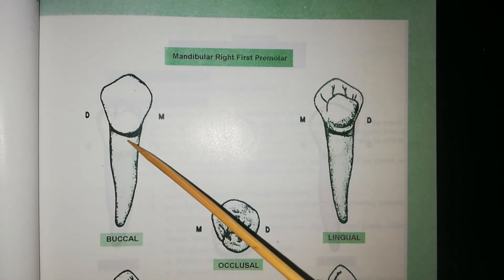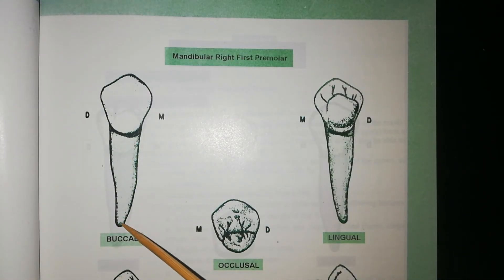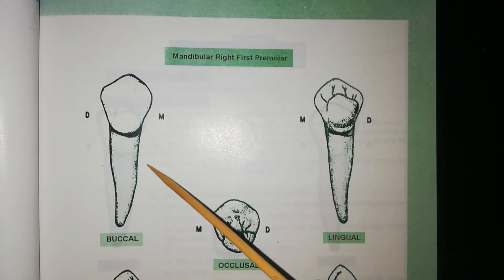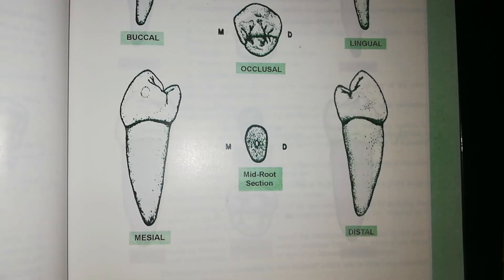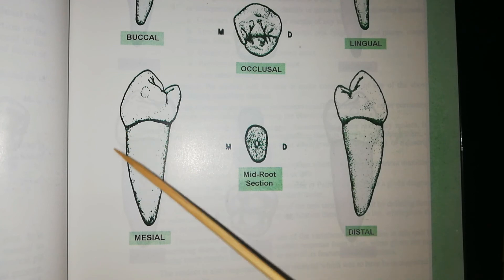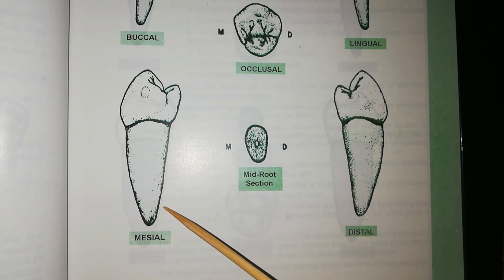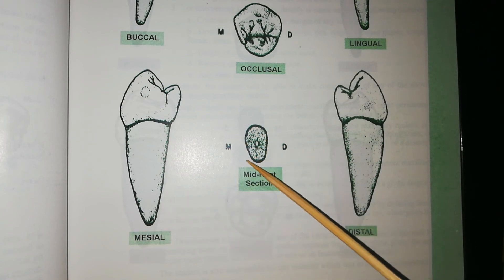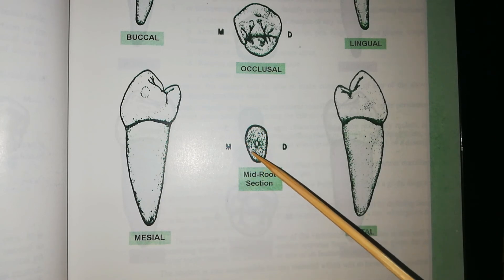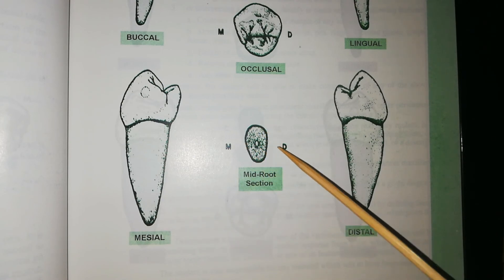The root is single, straight, and has a sharp apex. The length of the root is slightly less than that of the mandibular second premolar. The root is wider buccolingually than it is mesiodistally. The buccal and lingual surfaces are convex while the mesial and distal surfaces are slightly convex to flat. The midroot cross-section is ovoid in shape and is wider buccolingually than it is mesiodistally.